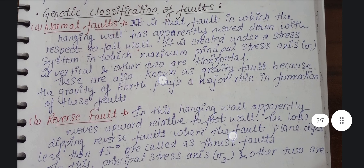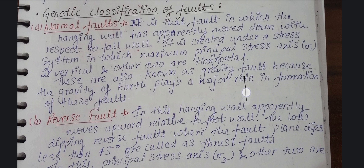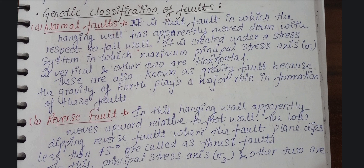First of all, normal fault. Normal fault is that fault in which the hanging wall is apparently moved down with respect to the footwall. It is created under the stress system in which the maximum principal stress axis is vertical and the other two are horizontal. This is a normal fault — you can use this definition type or write it in your own language.